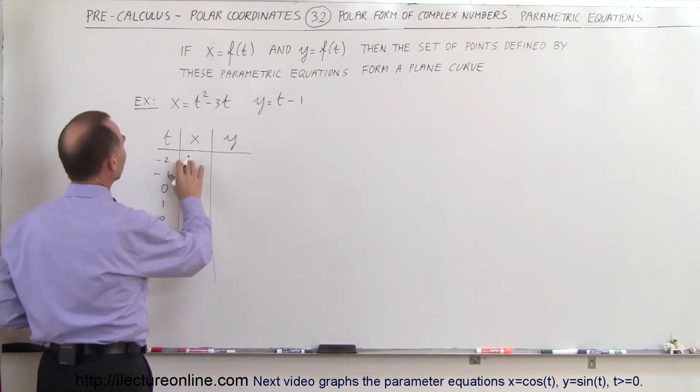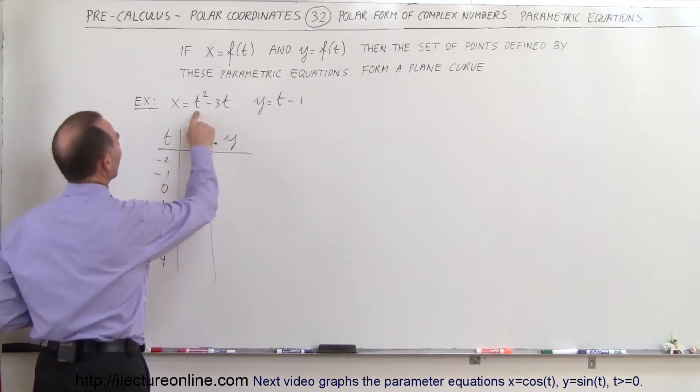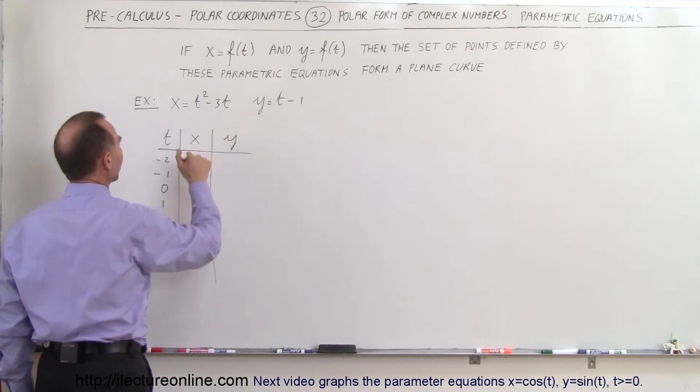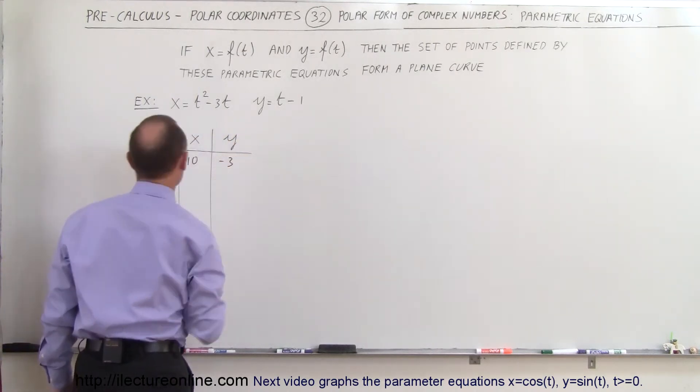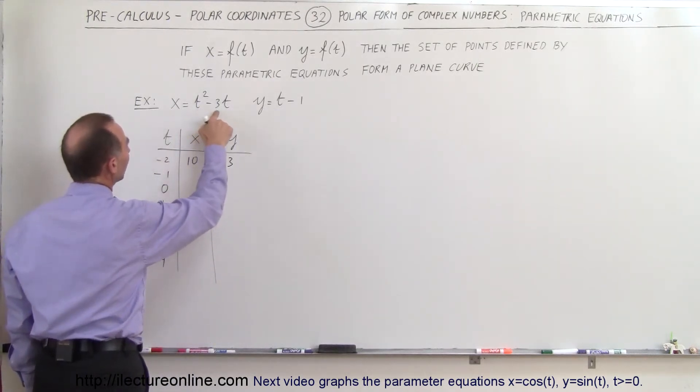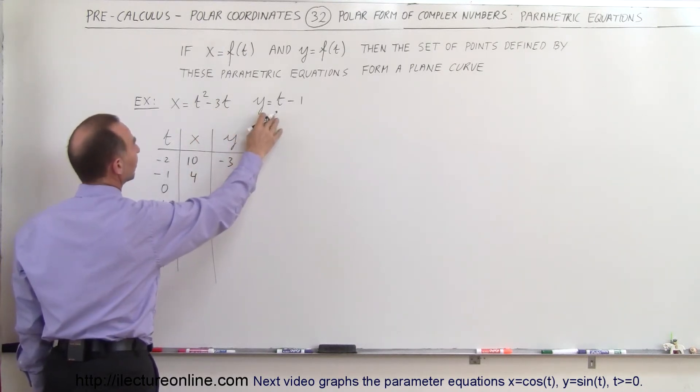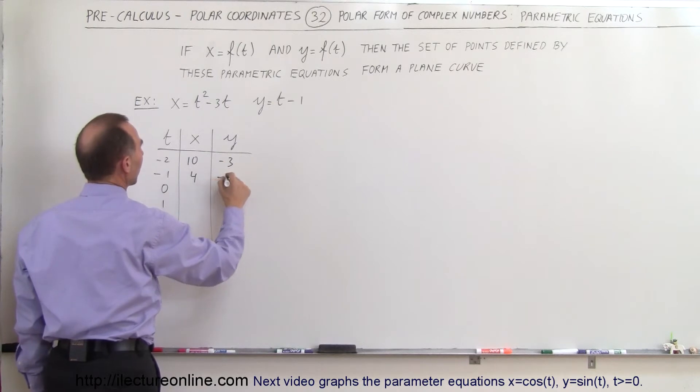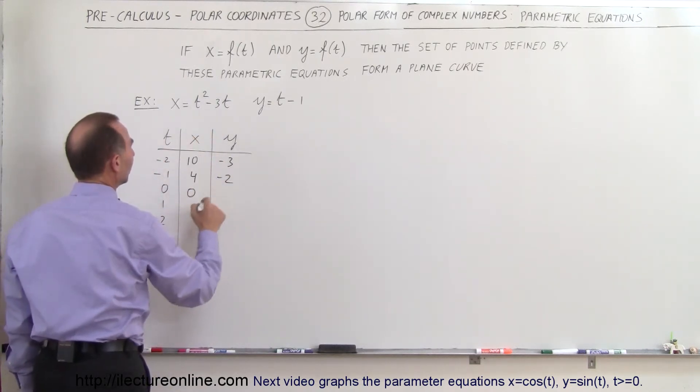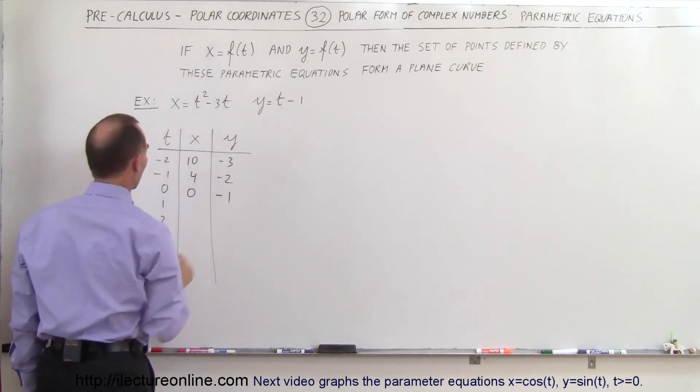Let's find out what x is equal to. When t equals -2, we get t squared, that would be 4, minus 3 times 2 is 6, that would be 10. So x would be 10. And if t is -2, then y would be -3. When t is -1, that would be 1 plus 3, which would be 4. And if t equals -1, that would be -2. When t equals 0, x equals 0. When t equals 0, y equals -1.